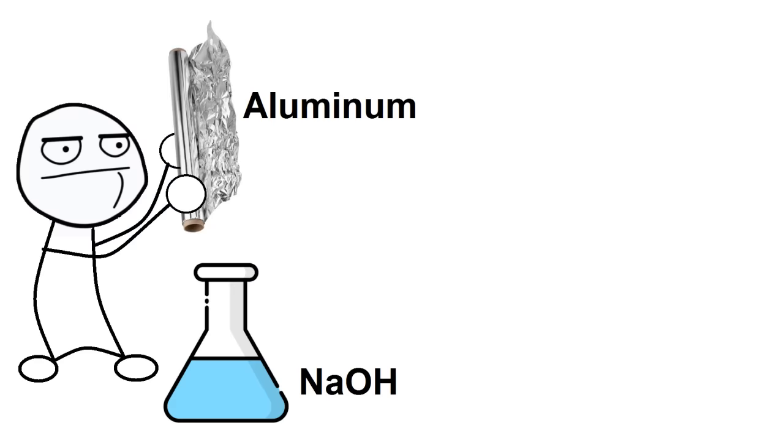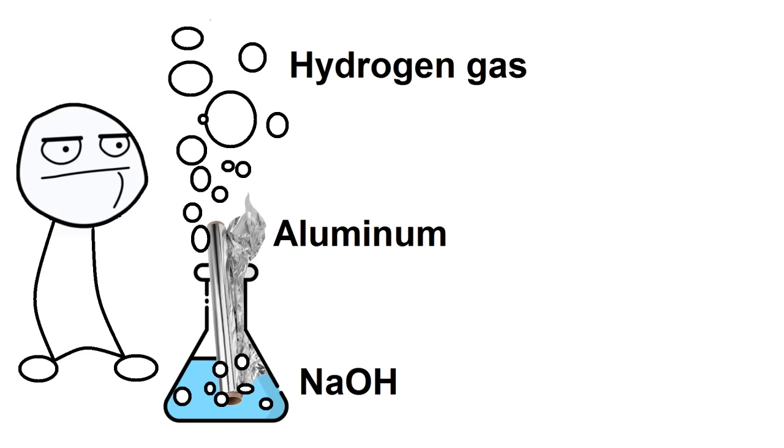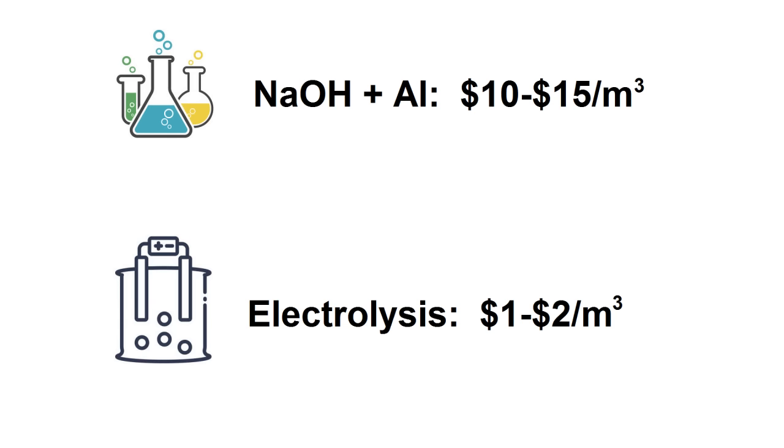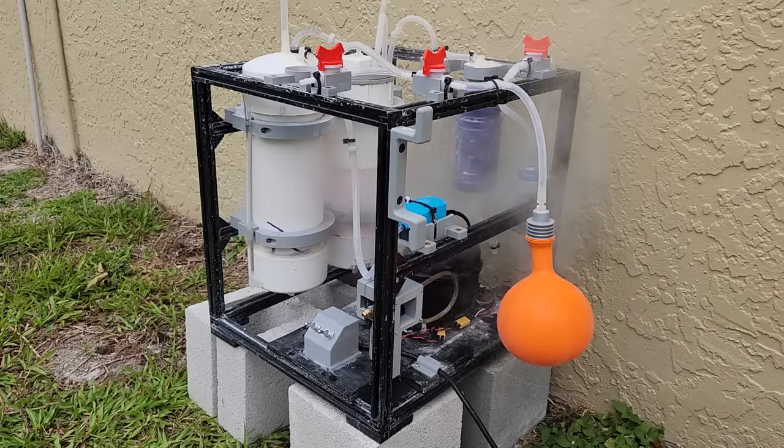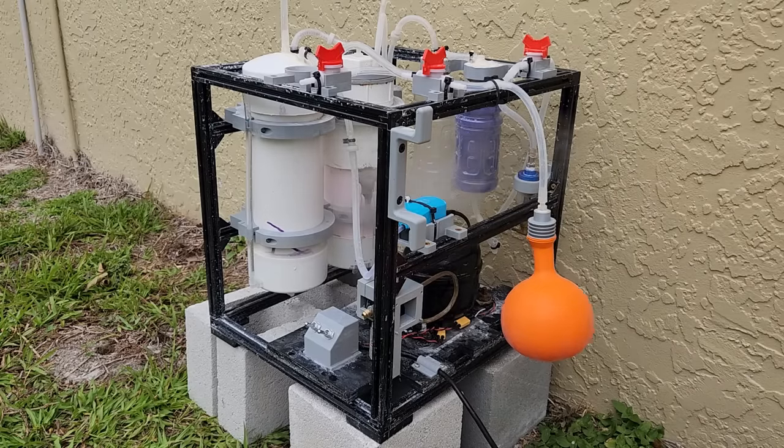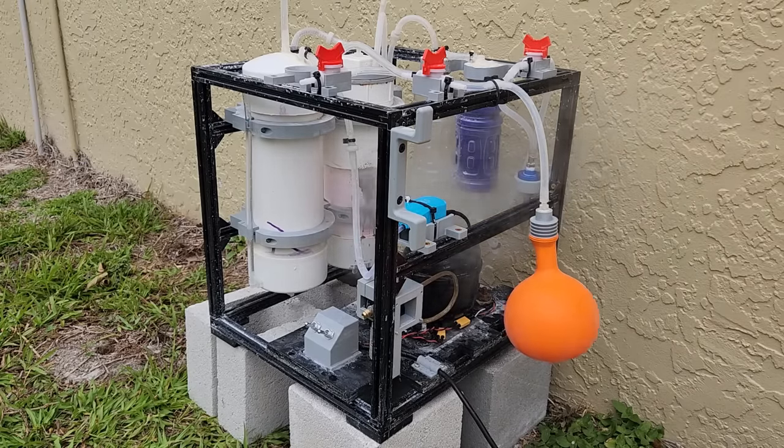I originally tried doing this the dirty way, by dissolving aluminum and sodium hydroxide. And it does work, but it's quite a bit more costly per unit volume of hydrogen and after getting blasted in the face with sodium hydroxide solution when my reactor tank exploded, I decided that I'd look into a different method.